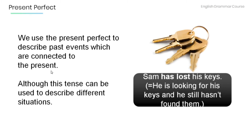Now we use the present perfect to describe past events which are connected to the present, although this tense can be used to describe different situations. Have a look at the example: Sam has lost his keys, meaning that he is looking for his keys and he still hasn't found them.